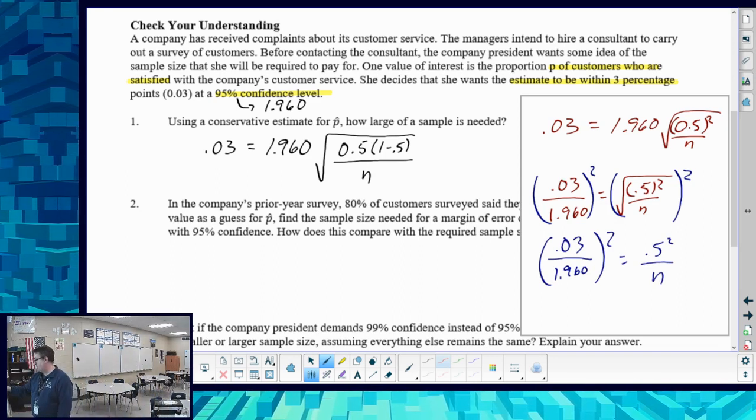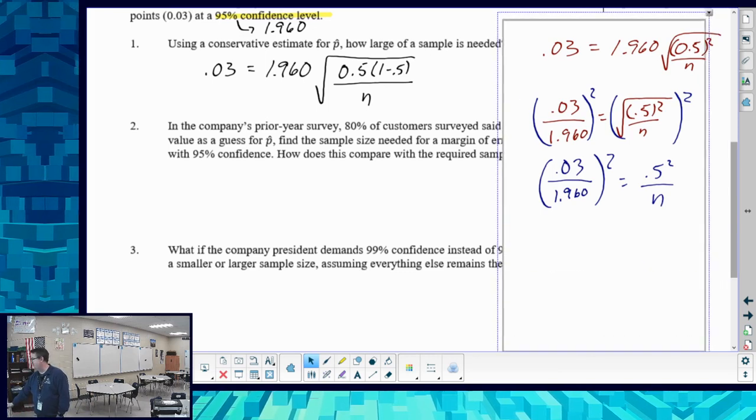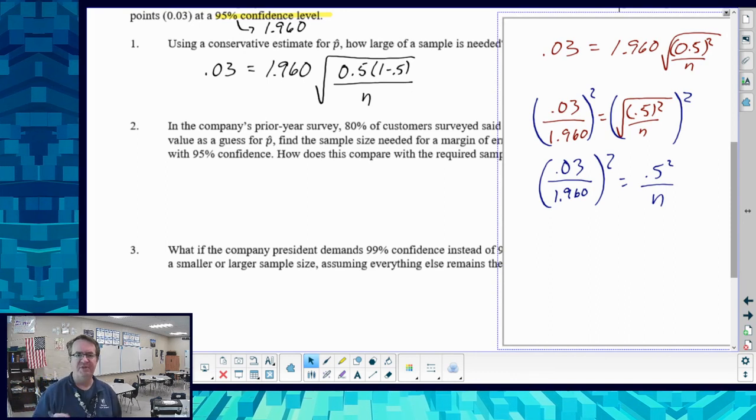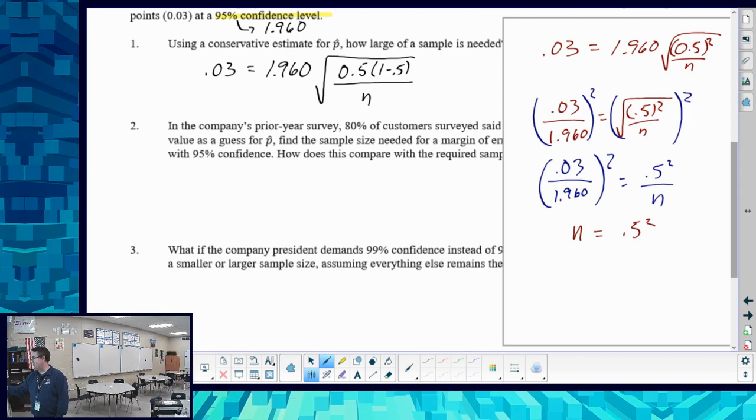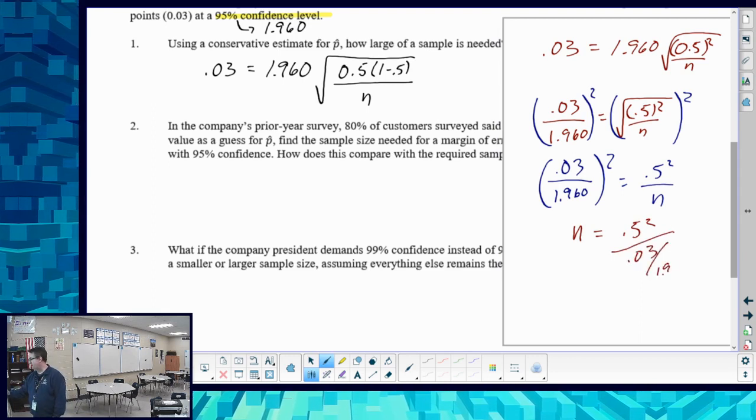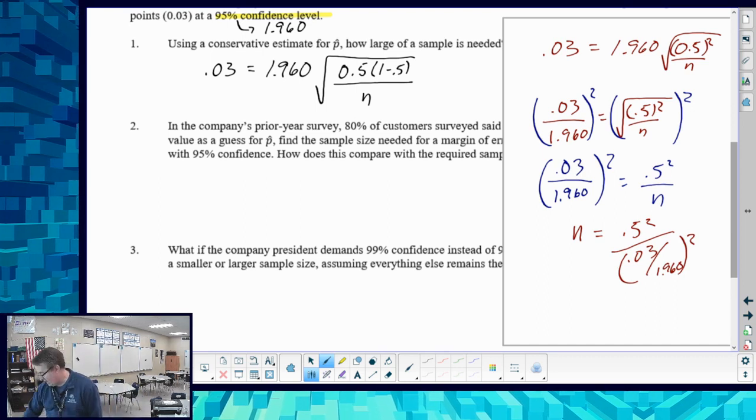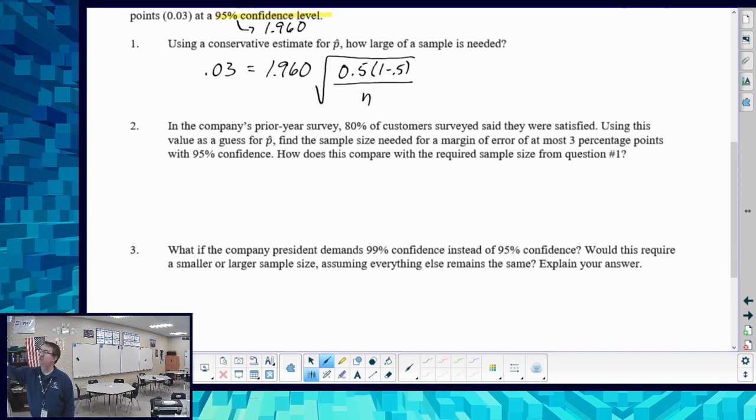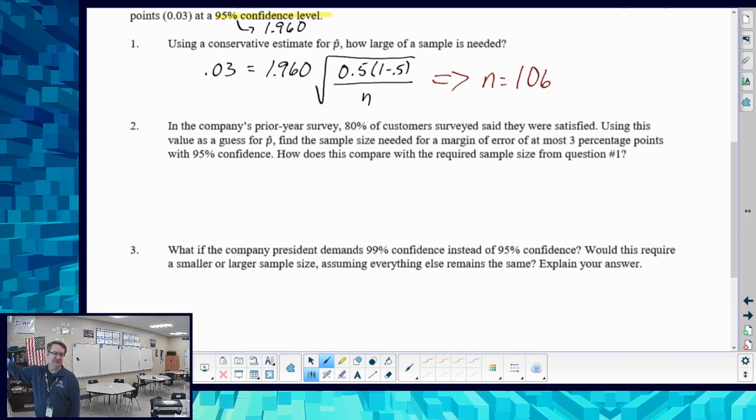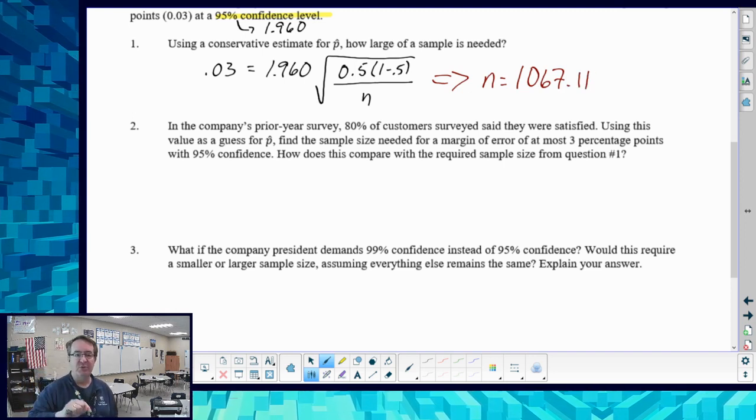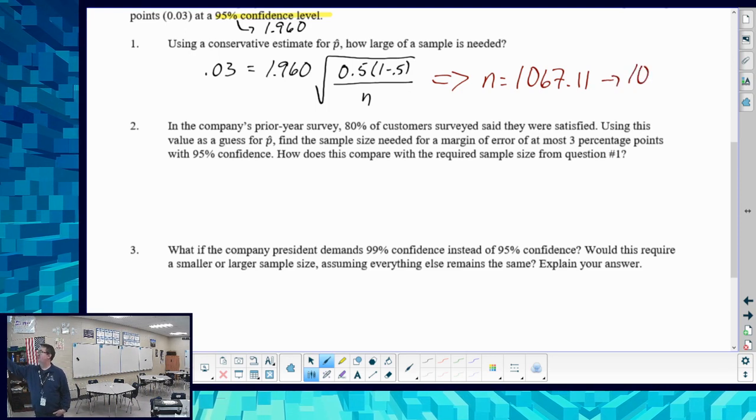The biggest thing that I would say to do is just make sure that you don't try to punch everything into your calculator all at once. That usually seems to be the part that throws most people. So n is going to end up being 0.5 squared divided by 0.03 divided by 1.960 squared. This is going to turn out to be 1,067.11 people. Now remember, we said that we're always going to round that up. Because if we go down to 1067, we're going to be less than 95%. So we're going to say that is 1,068 people.